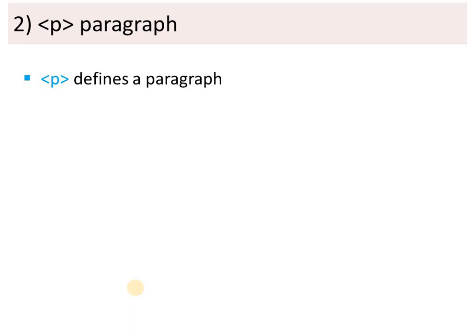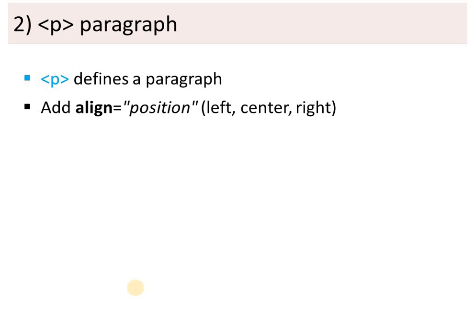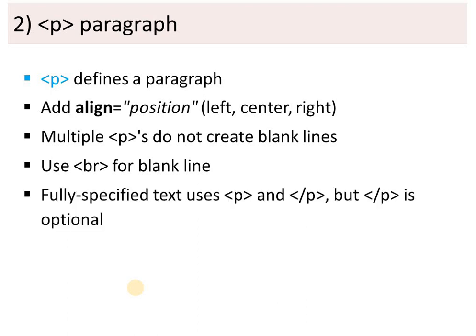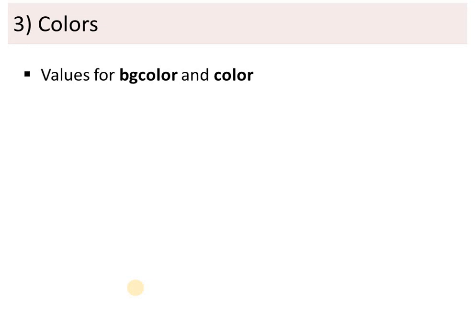The paragraph tag is generally used for articles and to provide description-style text. It also has an 'align' attribute, same as for headings. Multiple paragraph tags do not create blank lines between them — if you use a second pair of p tags after the first, it will not create a blank line. If you want a blank line, you should use the br (break) tag. The closing paragraph tag is optional.